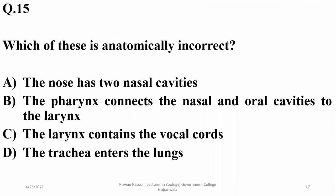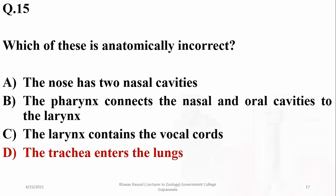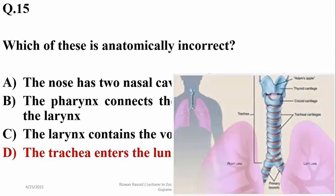Question fifteen: which is anatomically incorrect? The nose has two nasal cavities, pharynx connects nasal and oral cavities, and the larynx contains vocal cords — all correct. However, saying trachea enters the lungs is wrong because the trachea first divides into bronchi before entering the lungs. So delta is the answer.